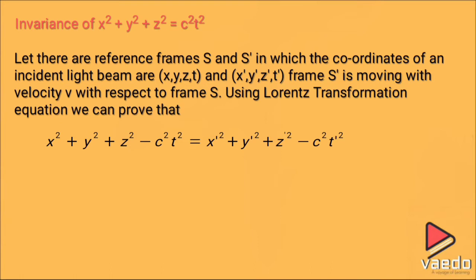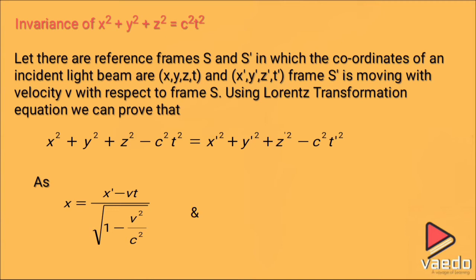Let us prove this. The first equation is x = (x' − vt') / √(1 − v²/c²). Similarly, we transform time as t = (t' − vx'/c²) / √(1 − v²/c²). These transformations have been discussed in earlier parts.